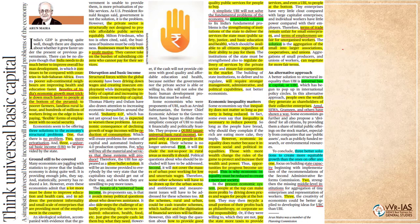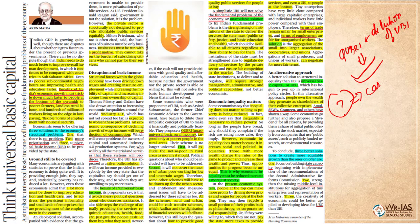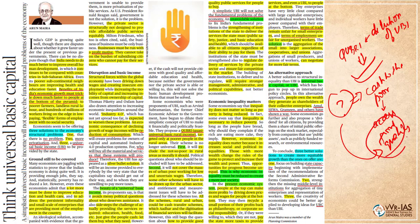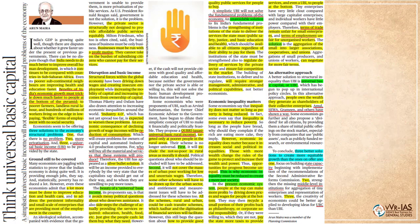Basically, the author is saying that the idea of QUBRI, which is a dilution of UBI, is fine. However, the question remains whether merely providing cash to the poor will lead them to accessing good quality public services — that is, who is going to provide these good quality services for the poor to buy with the cash they are given? Therefore, he says, a simplistic UBI will not solve the fundamental problems of the Indian economy. An unavoidable solution to fix India's fundamental problems is the strengthening of institutions of state to deliver the services of the state.